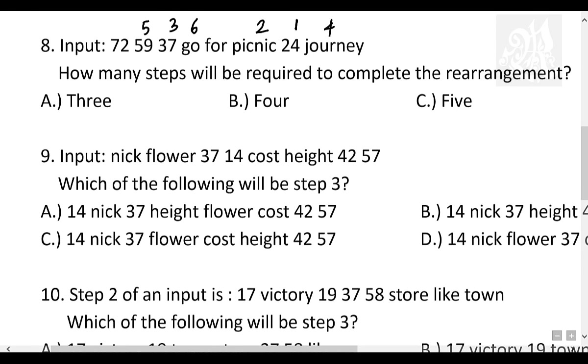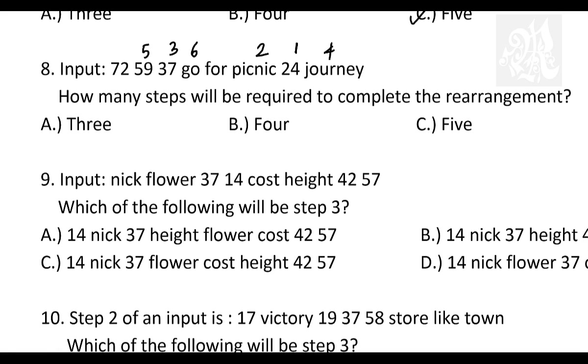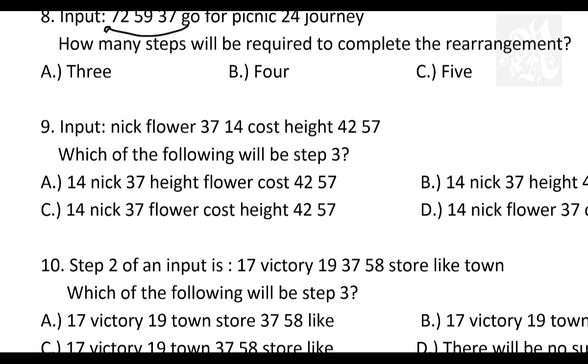How many steps are required to complete the rearrangement? Smallest number is 24. That's like one step. Then picnic, two. Then 37, three. Then you have journey, four. Then 59, you have five. Then go will also take one step. First is 24. Then picnic. Then 37. Then you'll have journey. Then you have 59. Then you have go. And 72 and four are automatically arranged. And that's the answer. Six steps. Option number D. Go should come ahead of 72. This go should go ahead of here.